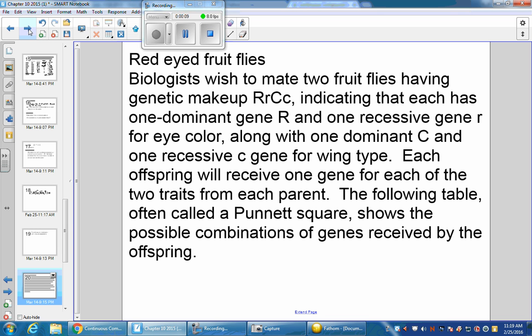Here's a biology question. Red-eyed fruit flies. A biologist wished to mate two fruit flies having genetic makeup RrCc, indicating that each has one dominant gene R and one recessive gene r for eye color, along with one dominant gene C and one recessive gene c for wing type. Each offspring will receive one gene for each of the two traits from each parent. The following table is often called a Punnett square. It shows the possible combinations of genes received by the offspring.